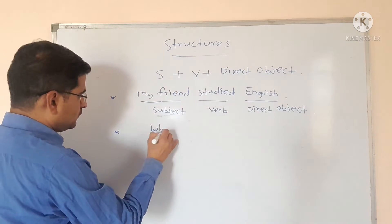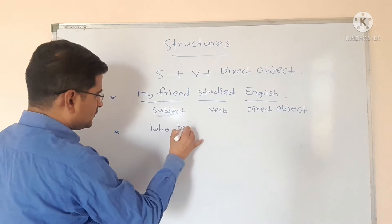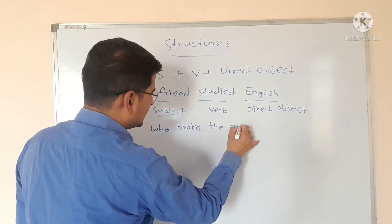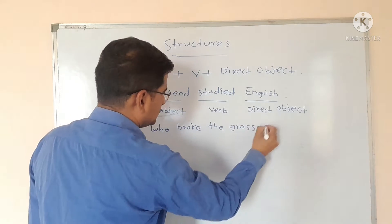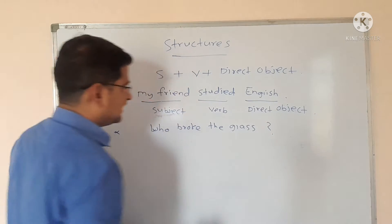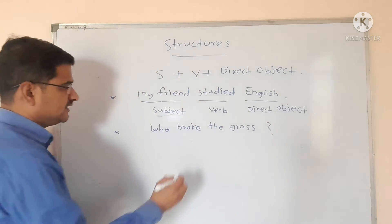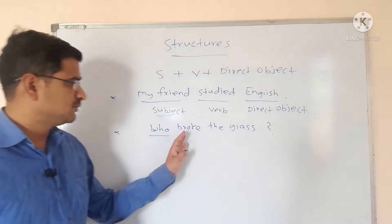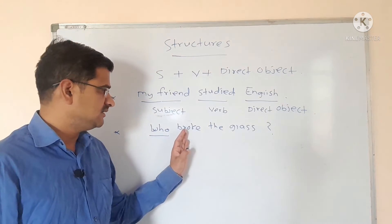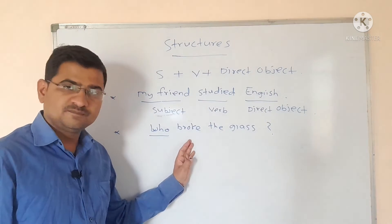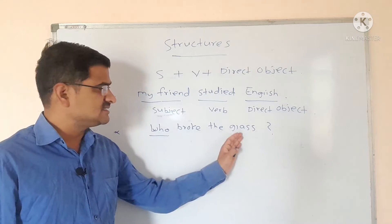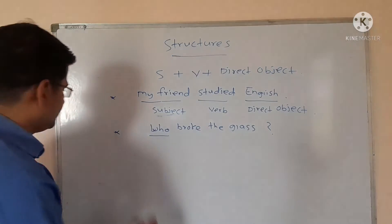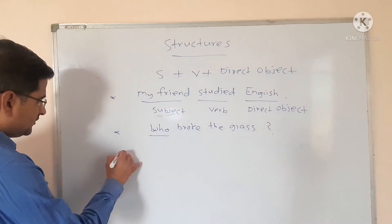Who broke the glass? Here, 'who' is the subject, 'broke' is the verb, and 'the glass' is the direct object. Look at the board.